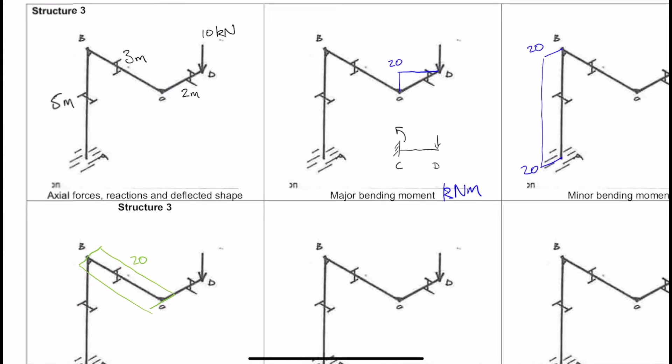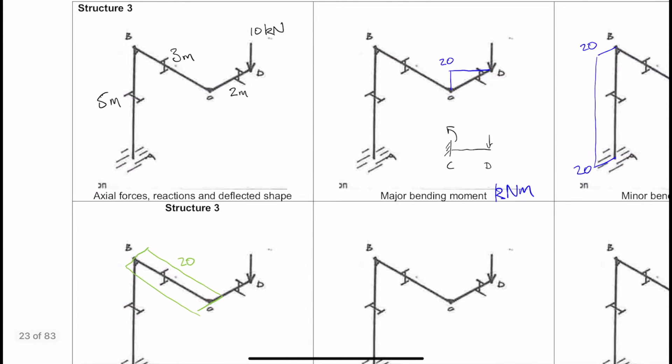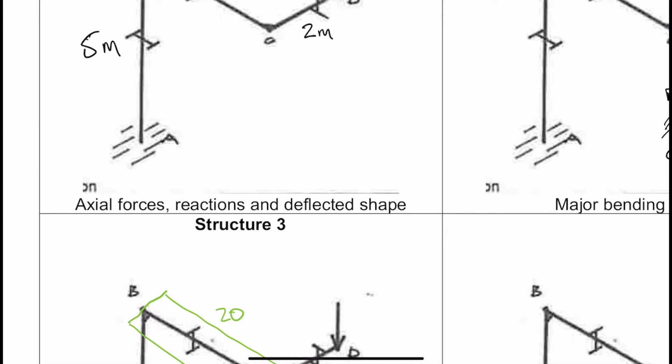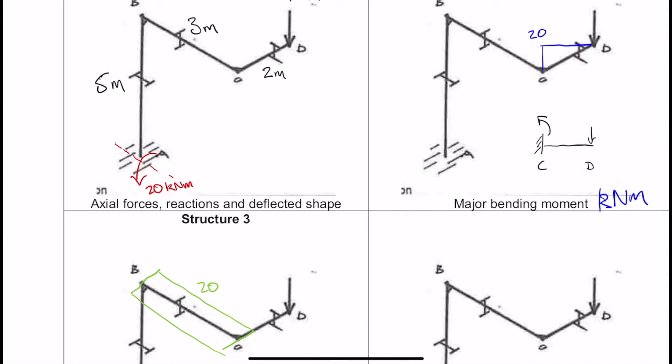Okay, so that gives us actually our first reaction here. This reaction down at A is a 20 kilonewton meter bending moment there.